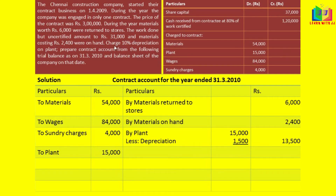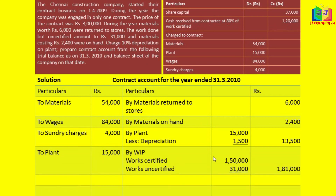For work in progress, we have to write the work certified. It is given that cash received from the contractee is 80% of work certified. We have to find 100% of this — work certified equals 1,20,000 into 100 divided by 80, which gives us 1,50,000. Works uncertified amounts to 31,000. If we add these, we get 1,81,000.